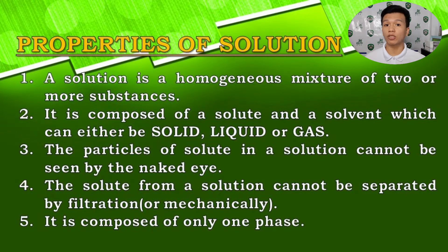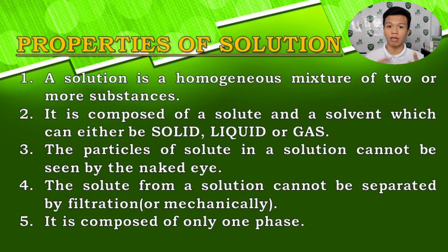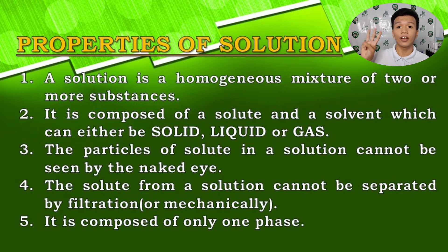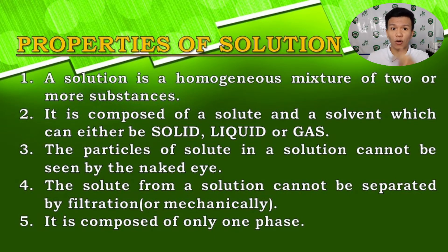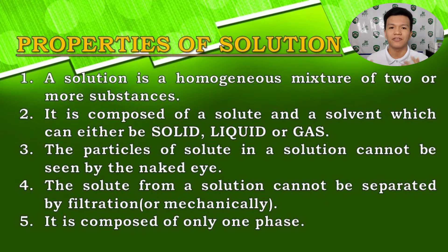Now let's see what the properties of a solution are. First, it is a homogeneous mixture of two or more substances — there is only one phase, and we cannot see its parts or composition. Second, a solution is composed of a solute and a solvent, which can either be solid, liquid, or gas. A common misconception is that solutes are always solid and solvents are always liquid, but that is wrong — solutes and solvents can either be solid, liquid, or gas.